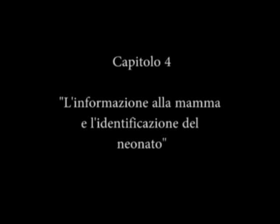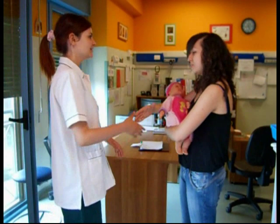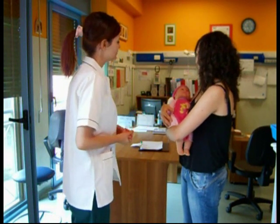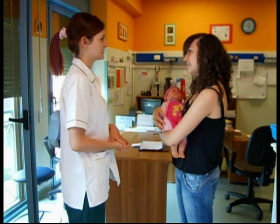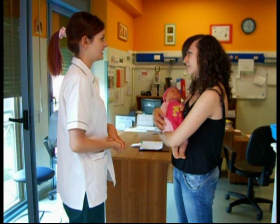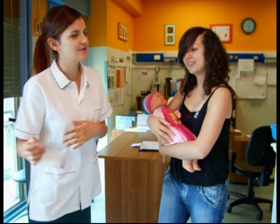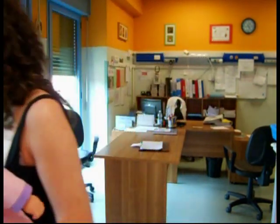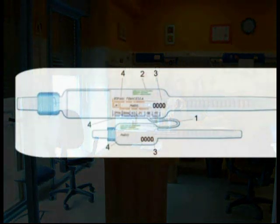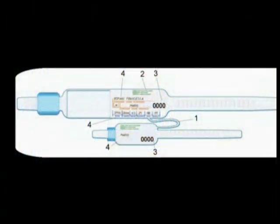L'informazione alla mamma e l'identificazione del neonato. Prima di procedere all'esecuzione della tecnica è opportuno presentarsi e informare la mamma sulla necessità e la modalità dell'esecuzione della medicazione del cordone umbilicale. Si invita la mamma ad accompagnare il neonato nella sala medica e ad assistere alla medicazione. L'identificazione del neonato deve avvenire con certezza, verificando i dati sul braccialetto identificativo e chiedendo conferma alla mamma dei dati anagrafici, utile anche per l'esatta compilazione della documentazione clinica.